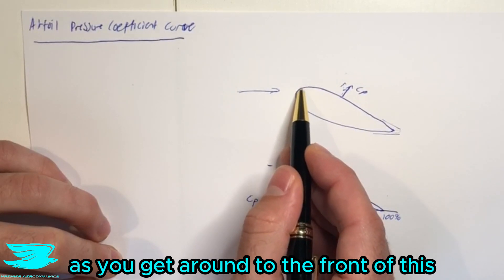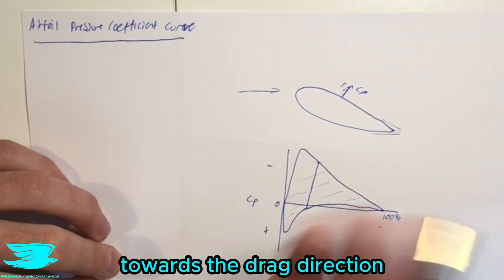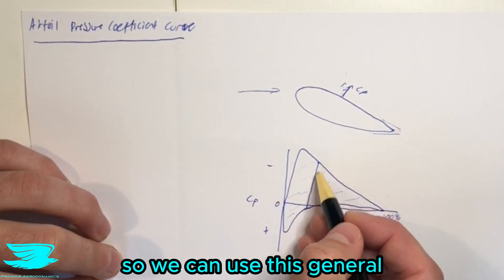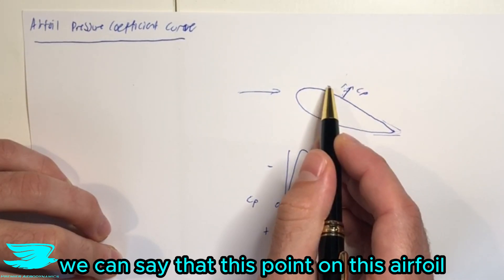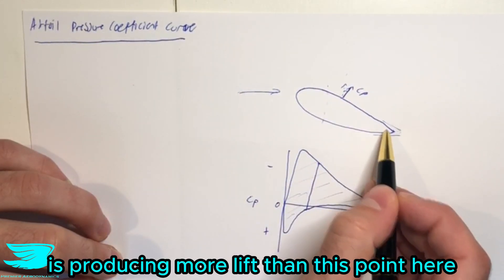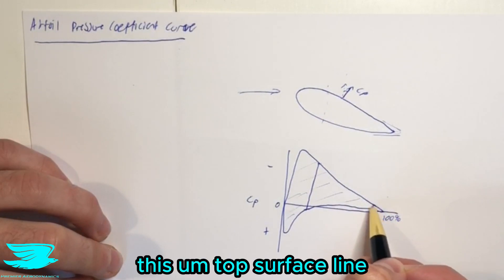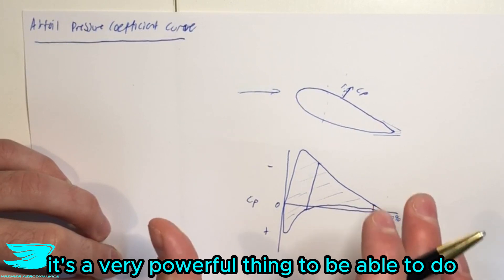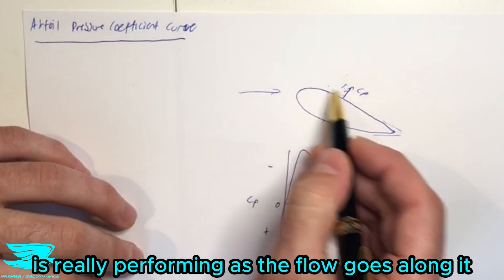Obviously, as you get around to the front, this surface becomes more and more curved towards the drag direction. But along this surface here, it's often in the lift direction, so we can use this general idea much more effectively. So we can say here, for example, which coincides with about here. We can say that this point along this airfoil is producing more lift than this point here, where there's very little distance between this top surface line and the bottom surface line. So that is a very powerful thing to be able to do, because now we know how this airfoil is performing as the flow goes along it.